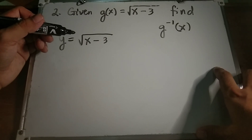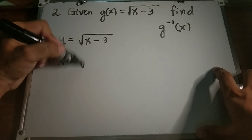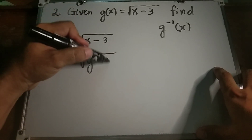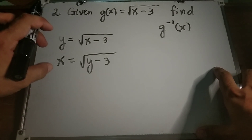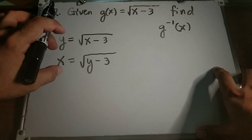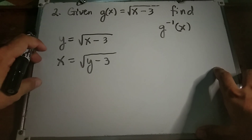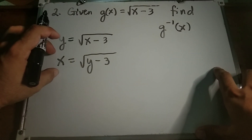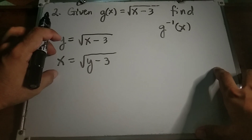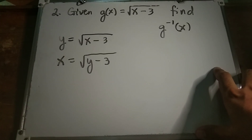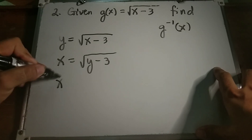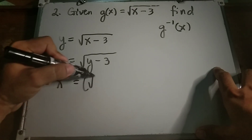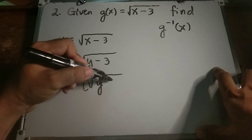Second step: replace y with x and also replace x with y, so x equals the square root of y minus 3. Then in step 3, we solve y in terms of x. On the right side we have a square root, so to eliminate the radical sign, we need to square both sides of the equation: x squared equals the square of y minus 3.